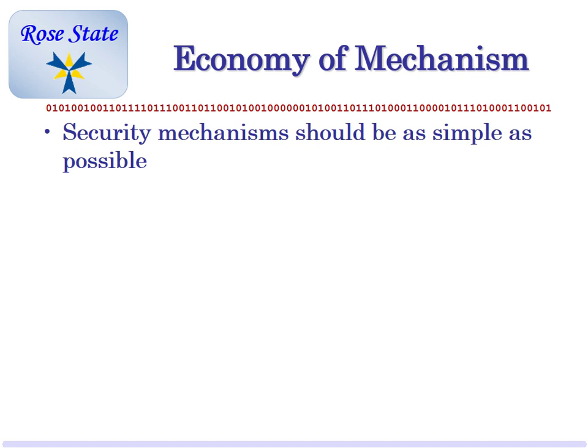Economy of mechanism: security mechanisms should be as simple as possible. It has absolutely nothing to do with money. Security mechanisms need to be as simple as possible, because when you make them too tough, people don't use them. You know what? It takes me 20 minutes to log into my machine, so I'm just going to leave it unlocked all the time. Or you have to change your password, so you stick it under your machine. But we don't want it so simple that it's too easy either.